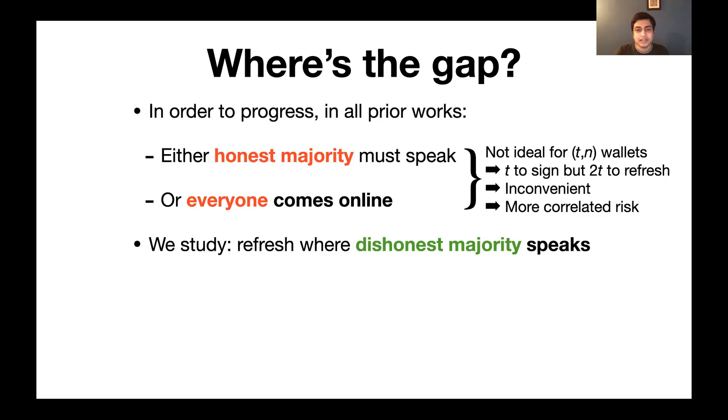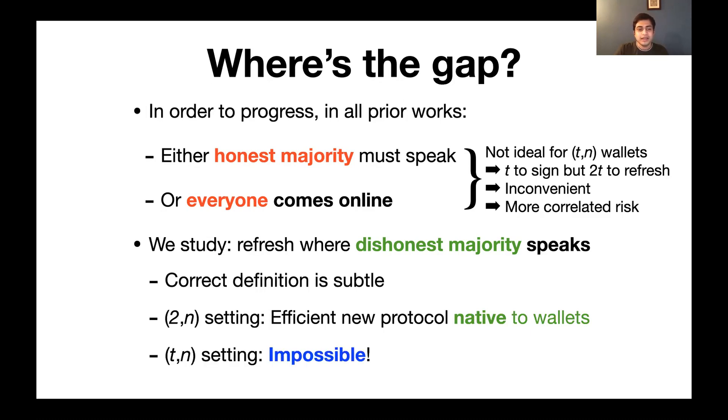So in this work, we study how to achieve proactivization where only a dishonest majority needs to speak. We show that the correct definition is quite subtle, and we give a 2-of-N threshold signing protocol that achieves this notion in a way that is native to the way that wallets operate. And we show that for T greater than 2, this notion is unfortunately impossible to achieve.